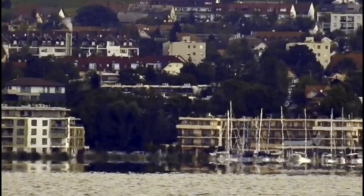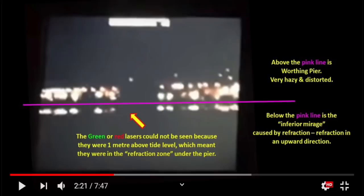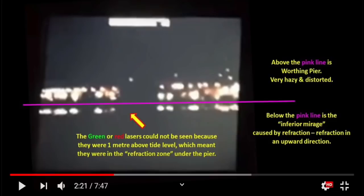If you follow these tests, you'll see people are constantly unable to spot the laser, which they quite correctly blame on the weather. For example, there's a recent test in Brighton where the light was bending upwards, but they could not see the laser. Now we've got another test asking: can the intense source of a laser one meter above the water be recorded 9.5 kilometers away by a camera one meter above the water level? And the answer is yes, of course it can. We've seen time and again that lasers are often visible over water when geometrically they should be hidden behind the curve, so there should be no surprise. But what's actually going on? Well, there are two things to consider: refraction and beam divergence.